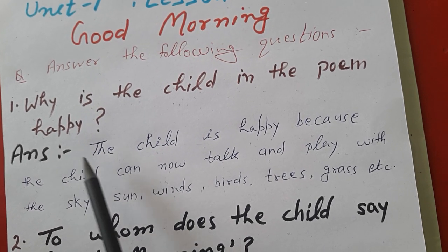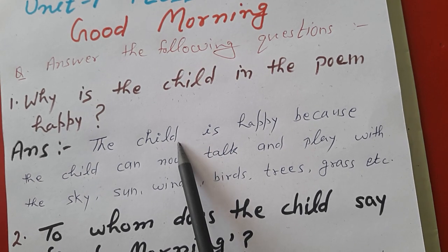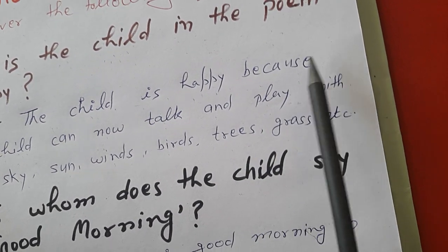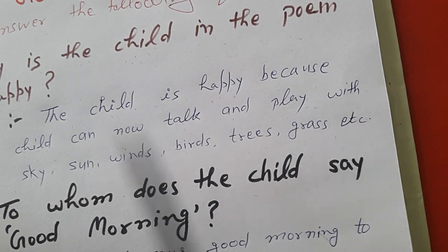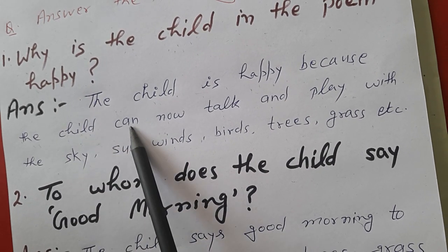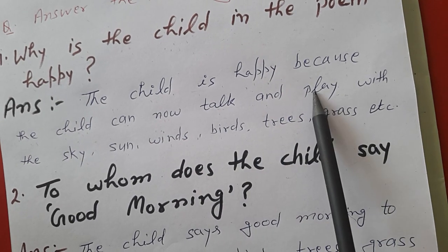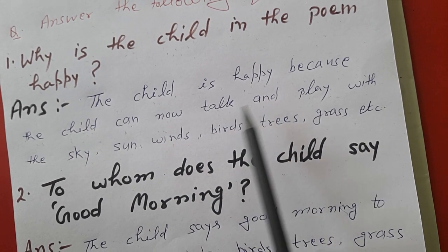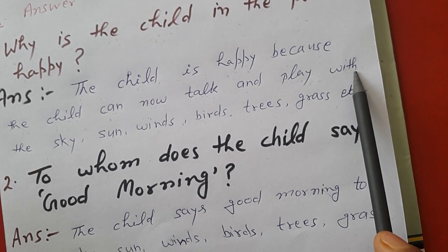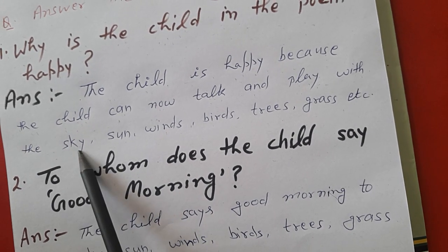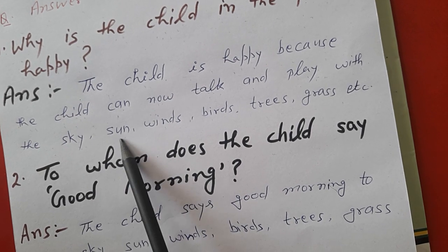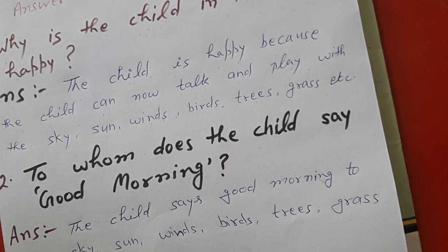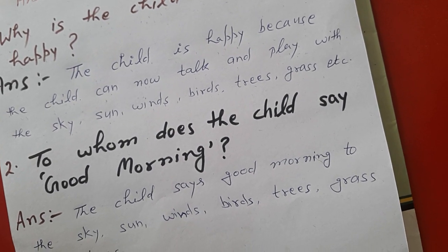Answer: The child is happy — bacha khush hai — because the child can now talk and play. Bacha ab baat kar sakta hai aur khail sakta hai with the sky, sun, winds, birds, trees, grass, etc.